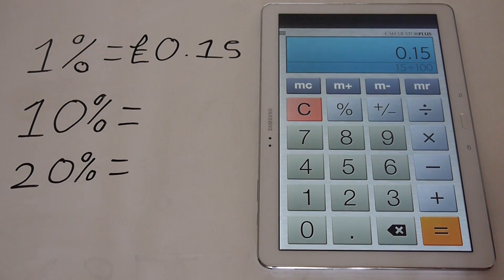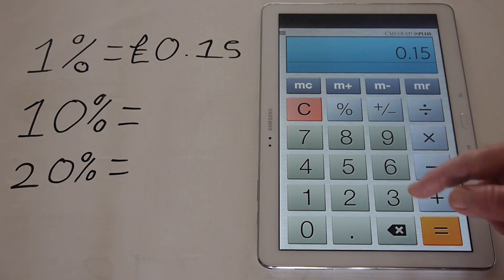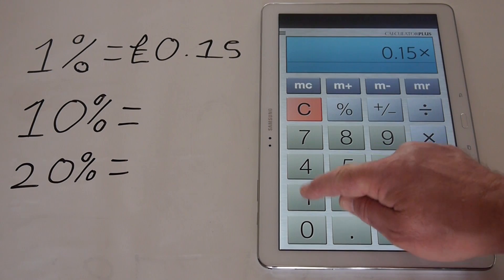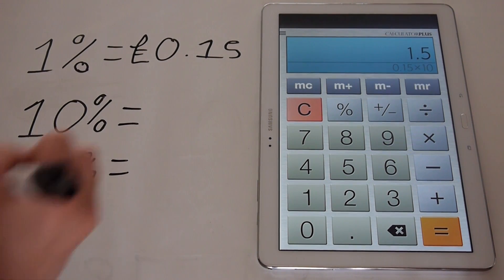OK, so if 1% is 15 pence, 0.15 of a pound, we're going to multiply that by 10. I'll just cancel that. So it's 0.15 of a pound, 15 pence. We're going to times it, multiply it by 10. And that equals 1.5 of a pound, £1.50.